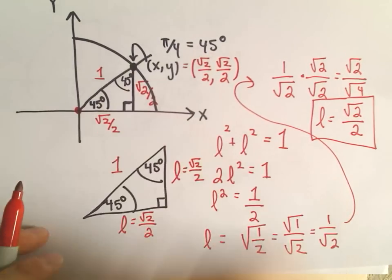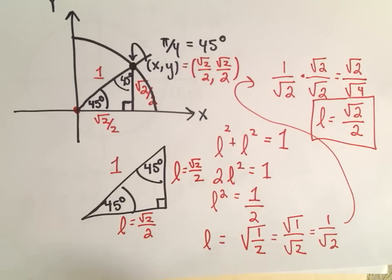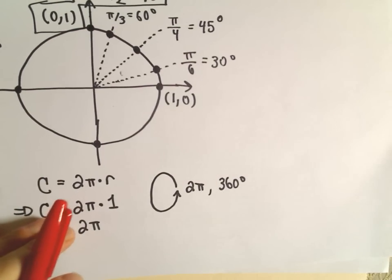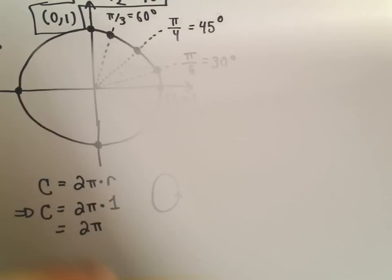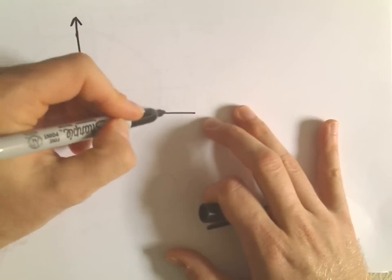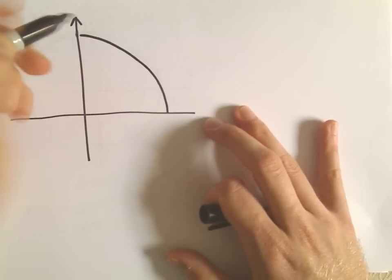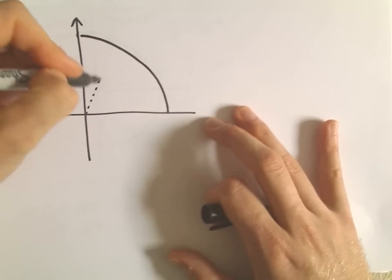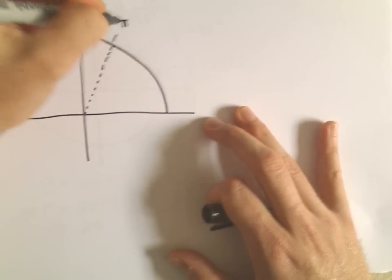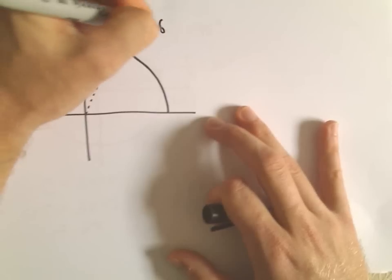45 degrees — all we did was just use Pythagorean theorem, nothing worse than that. Let's do the 60-degree one, and the 30-degree one — we're really doing them both at once. Let's find the points associated with 60 degrees. There's π over 3, or equivalently 60 degrees, and we want to find the x and y coordinate associated with the angle 60 degrees sitting on the circle.